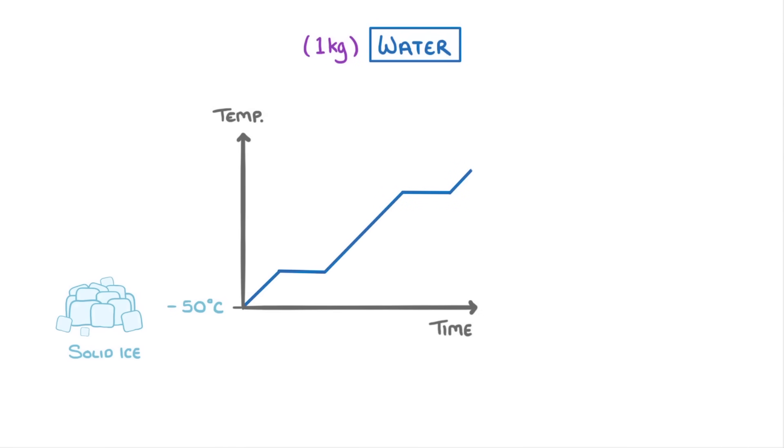To see how all of this works, let's imagine that we had one kilo of water, and that we heated it all the way from minus 50 degrees Celsius, where it was solid ice, to 150 degrees Celsius, where it was gaseous water vapor.